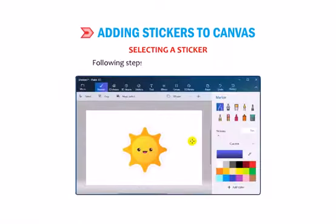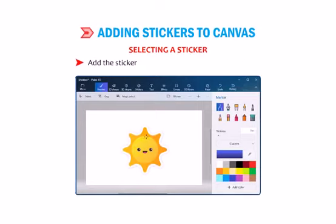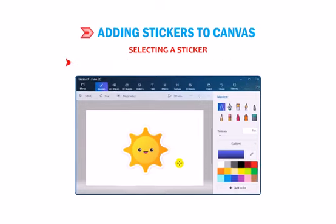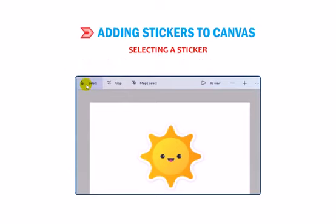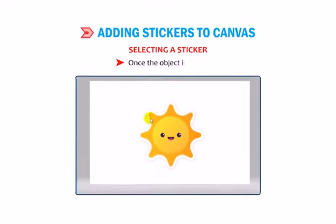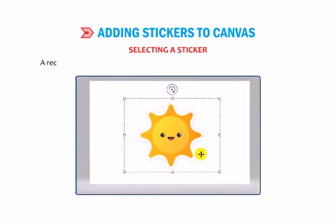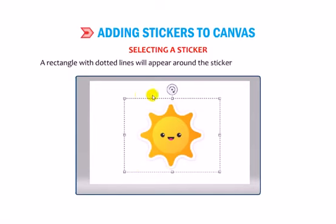Following steps can be used to select a sticker. Add the sticker Sun to the canvas as shown in the figure. Click on the Select tool placed below the top menu. Once the object is selected, a rectangle with dotted lines will appear around the sticker as shown in the figure.